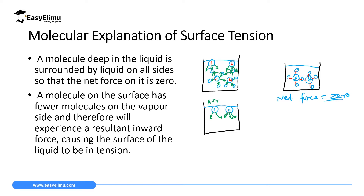For molecules one and two at the surface, they don't experience a force upwards toward the air, because in air we have different molecules, so it would only be a passive force. They only experience cohesive force downwards. The net force for surface molecules is therefore downward. These particles one and two will be experiencing a stretch downward, and this downward net force is what we call the surface tension force.